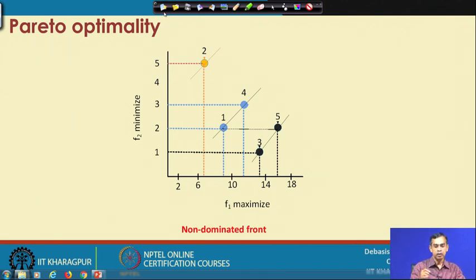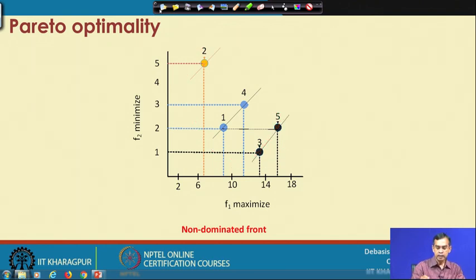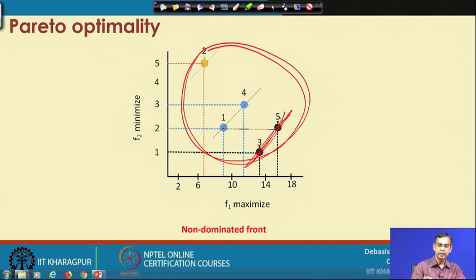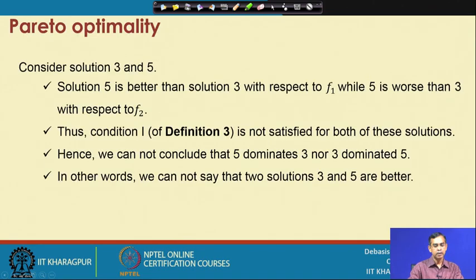The optimum solutions with respect to our multi-objective search are those on this front. If this is the entire search space, all solutions on the front are desirable because they are at least better with respect to at least one objective vector. If all feasible solutions are considered and the non-dominated front is identified among them, that front is called the Pareto optimal front. The condition is that a solution is termed Pareto optimal only when the entire search space is covered.